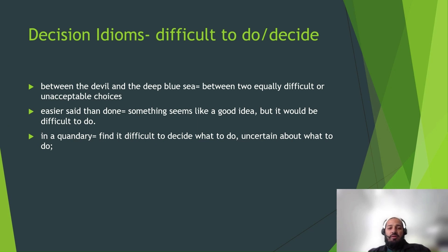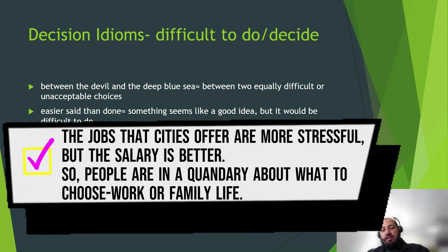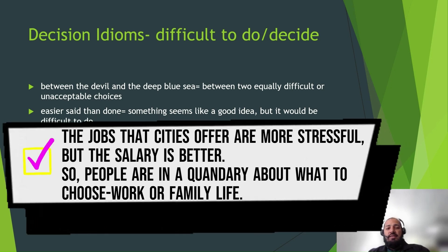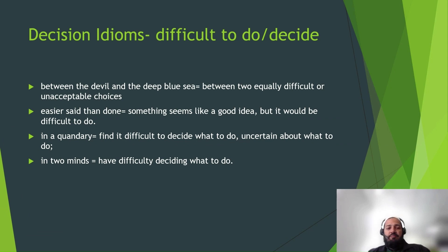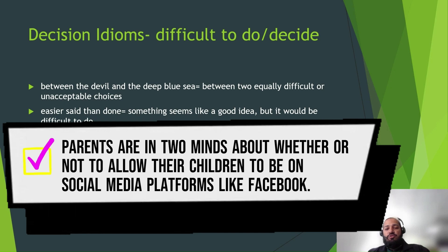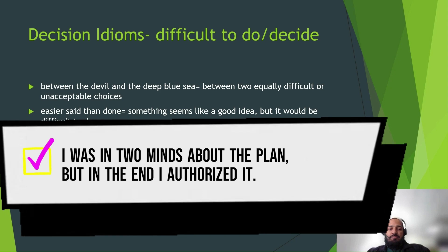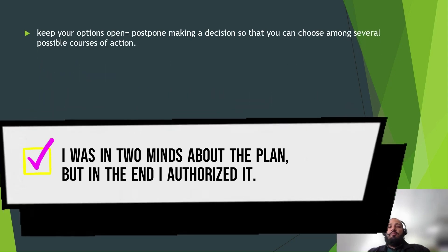Next is 'in a quandary,' meaning finding it difficult to decide what to do or being uncertain. For example: 'The jobs on offer are most stressful, but the salary is better, so people are in a quandary about what to choose — work or family life.' Then 'in two minds' — when you are not able to decide, it means having difficulty deciding what to do. For example: 'Parents are in two minds about whether or not to allow their children on social media platforms like Facebook.'